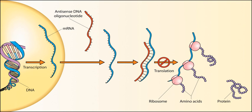Protein-coding and non-coding RNAs can be transcribed from the sense strand. Additionally, the terms sense and antisense are relative to the RNA transcript in question and not to the DNA strand as a whole. In other words, either DNA strand can serve as the sense or antisense strand for a particular RNA transcript.